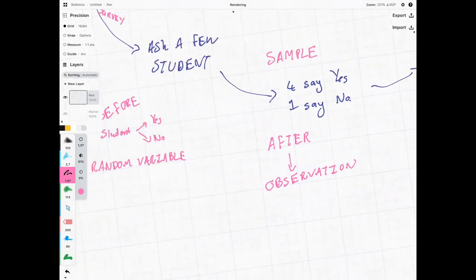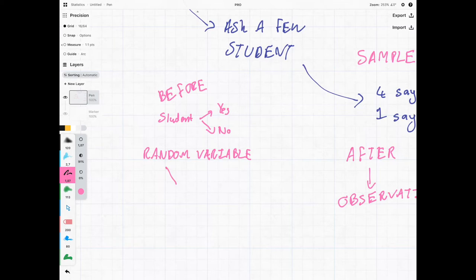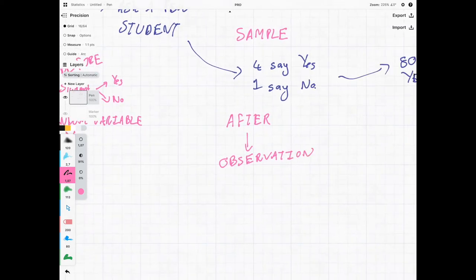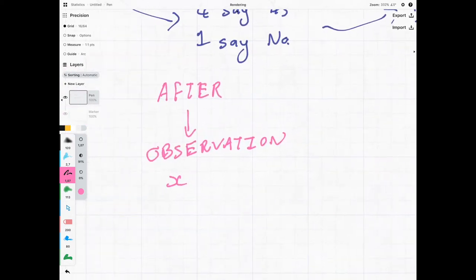Once the student has answered and they've partaken in the sample, so after the student answers or after we flip the coin, what we have is an observation. And this would be in the situation, if we have to use our notation, we use the capital X to denote the random variable, and we will use the lowercase x to denote observation. In this case, the observation can either be yes or the observation can be no.